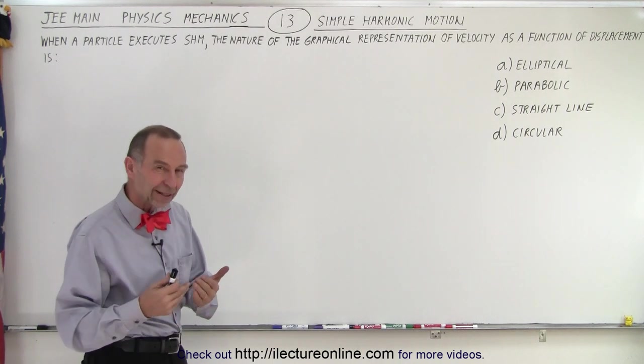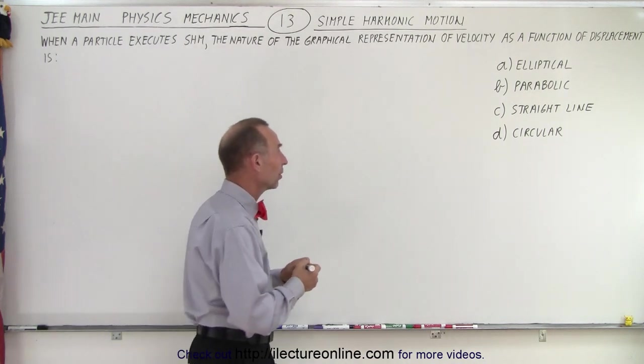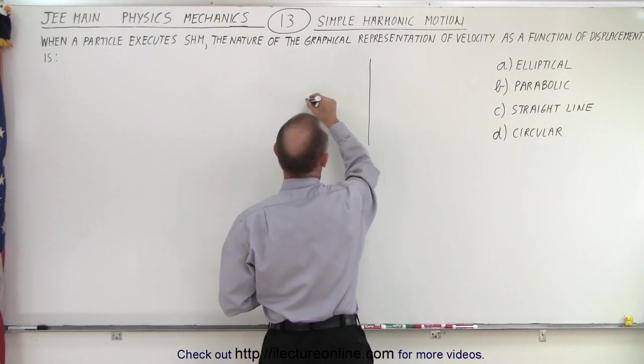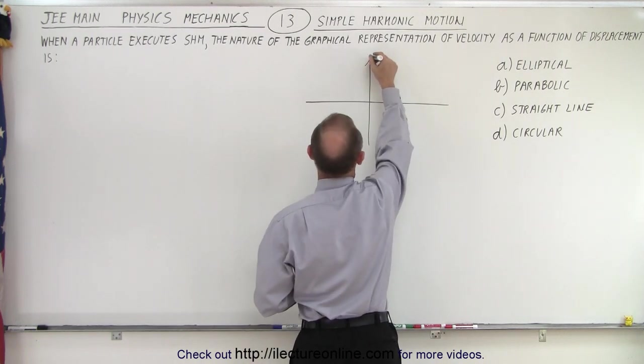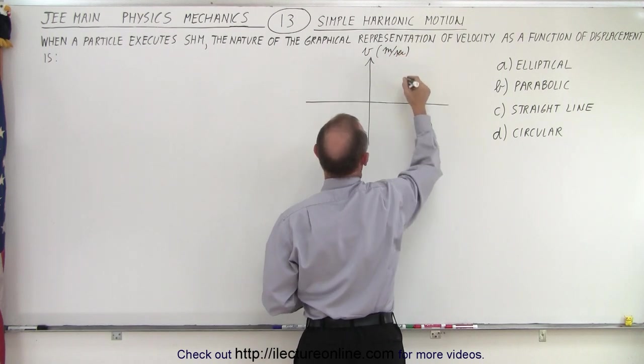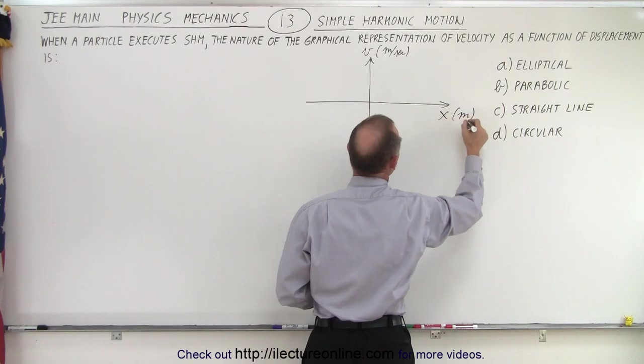So let's think about it. First of all, let's draw a velocity versus displacement coordinate system. So velocity would be in the vertical direction, displacement in the horizontal direction. Velocity would be in terms of meters per second, and the horizontal direction, x, would be displacement in terms of meters.